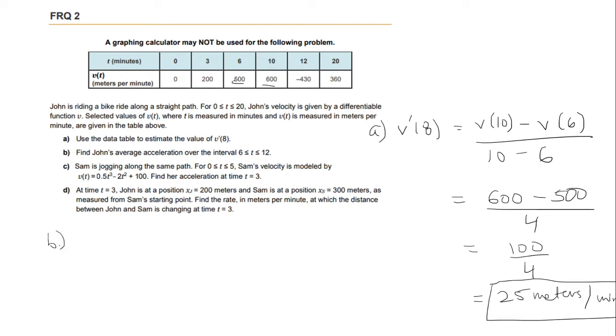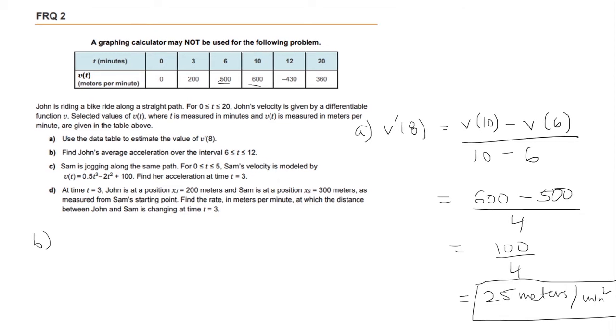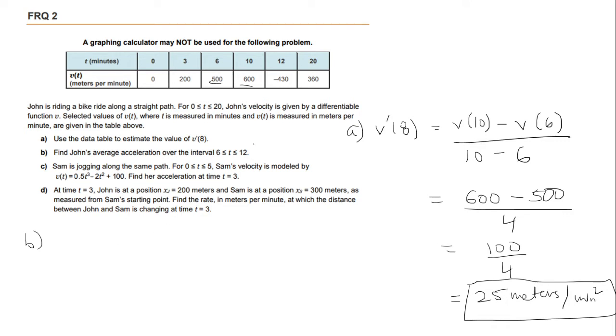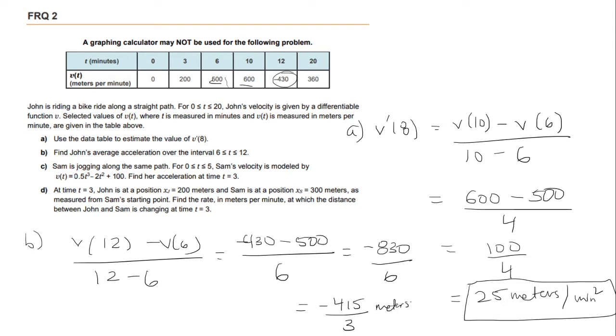For part B we want to find John's average acceleration over the interval from 6 to 12. Okay, so for that we want to find the average rate of change from 6 to 12. So that will be v of 12 minus v of 6 over 12 minus 6. v of 12 is negative 430, v of 6 we said is 500, and then 12 minus 6 is 6, so this is negative 830 over 6 which is negative 415 over 3, and we need the units for that to be meters per minute squared.